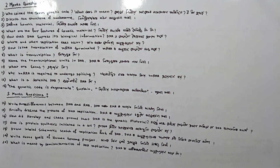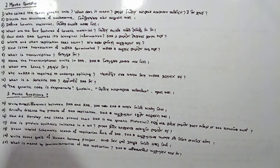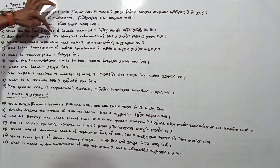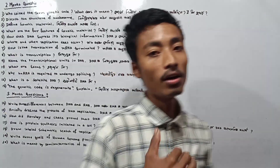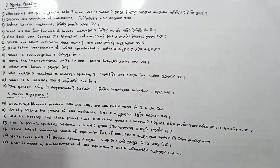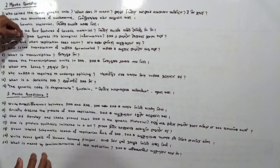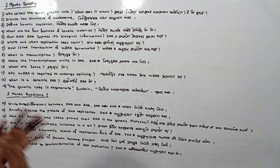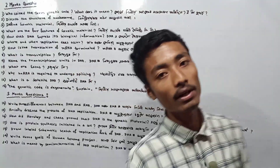The third question is: what are the four features of genetic material? The third question is also: how does DNA express its biological information? DNA is something that is very important. The second question is: where and when does replication occur? What kind of replication does occur?